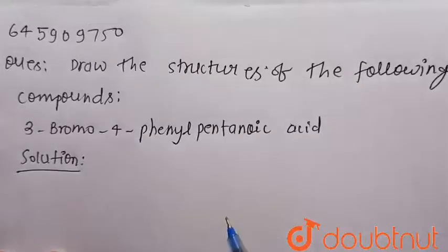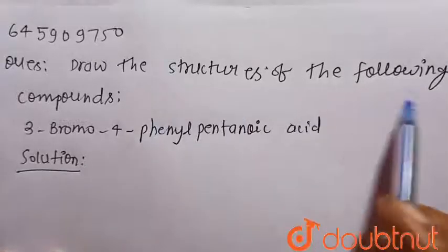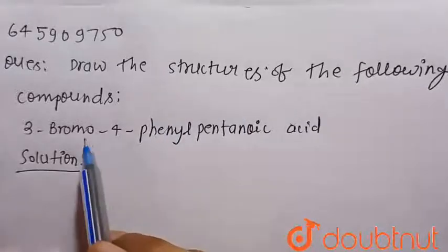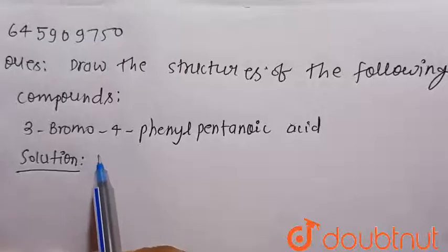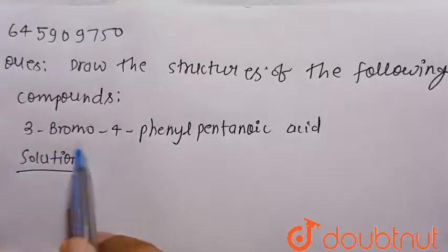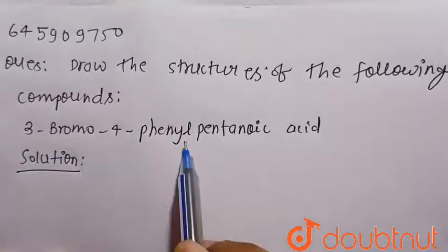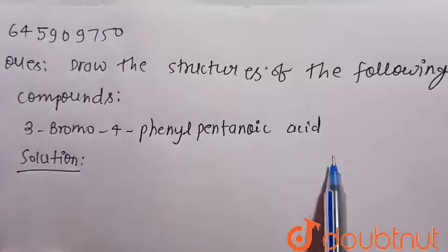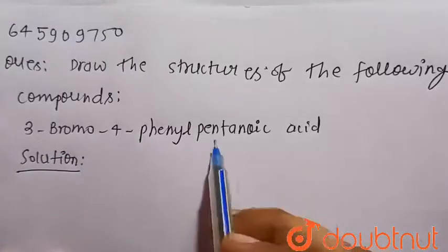Hello everyone, consider the given question: draw the structure of the following compound. The given compound is 3-bromo-4-phenyl-pentanoic acid.